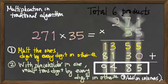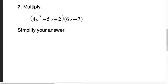Your task for the next 10 minutes or so is going to be to figure out how to port this understanding of the traditional multiplication algorithm into an understanding of how we can tackle problem number seven. Problem seven asks you to multiply these two polynomials together. 4v squared minus 5v minus 2 multiplied by 6v plus 7. So that's your task. Figure out how to apply a vertical method to that multiplication.